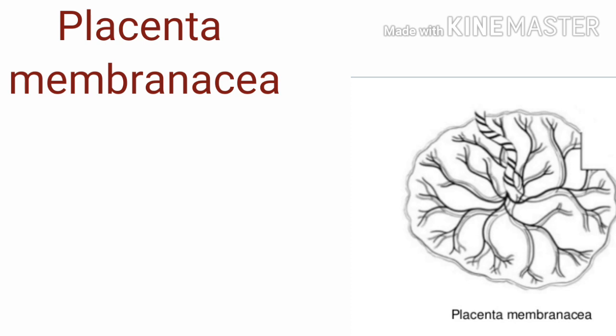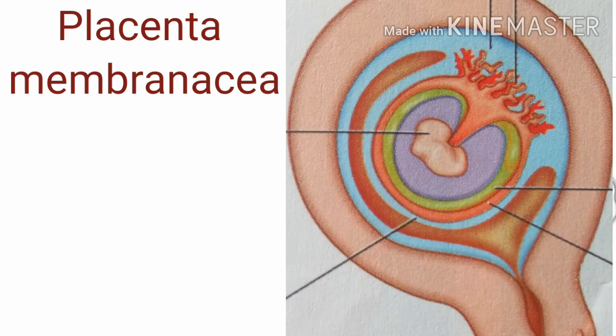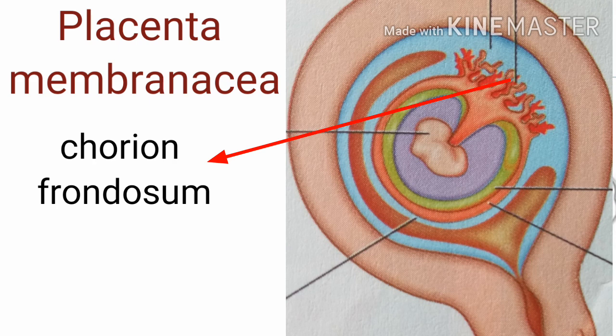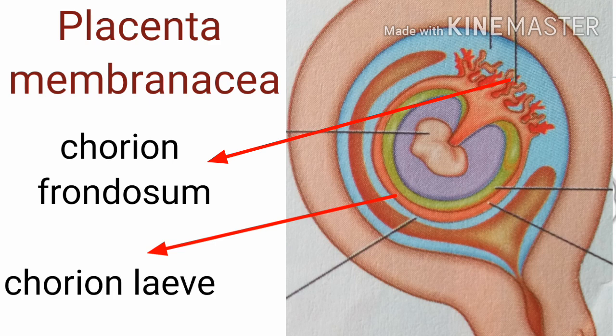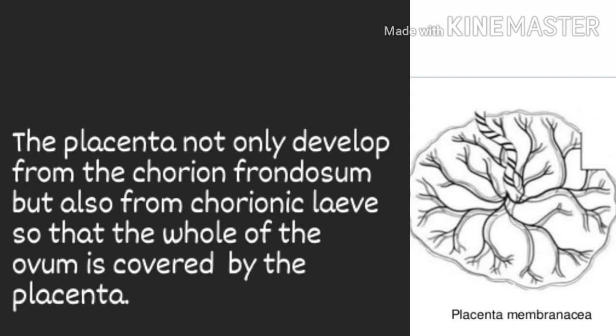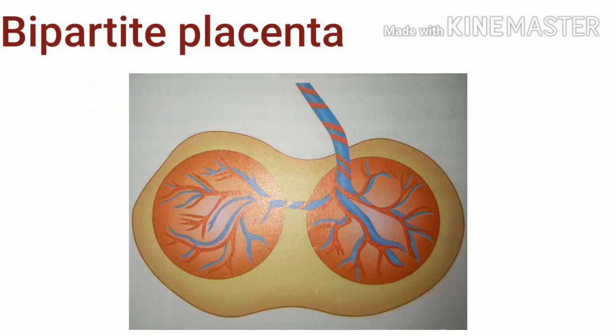The third placental abnormality is placenta membranacea. In this case the placenta will be excessively large and thin compared to normal placenta. Normally the placenta develops from the chorion frondosum, but here it develops from both the chorion frondosum and the chorion laeve. Because it develops from a larger area, the size of the placenta is also greater, and it covers the majority of the developing fetus.